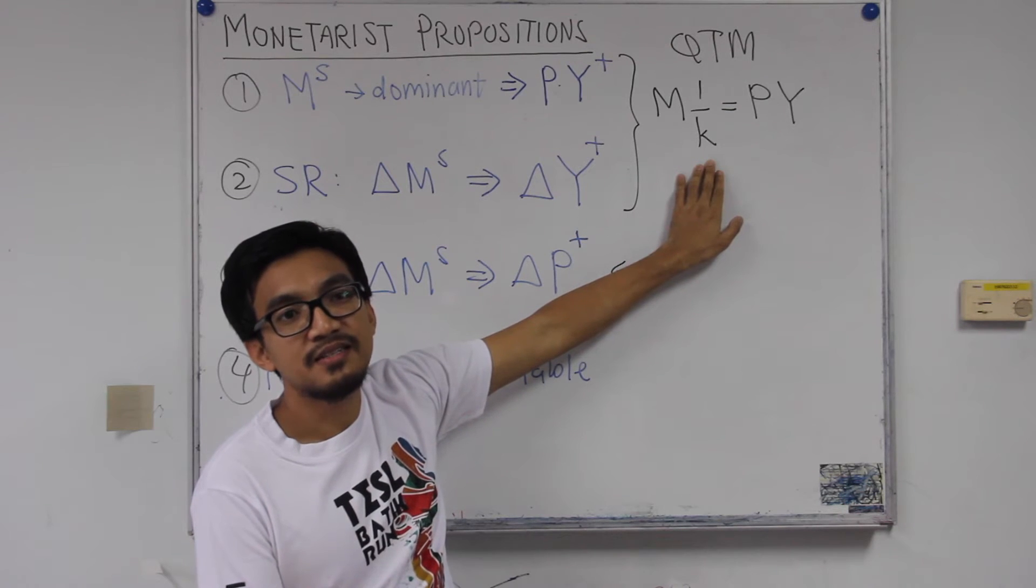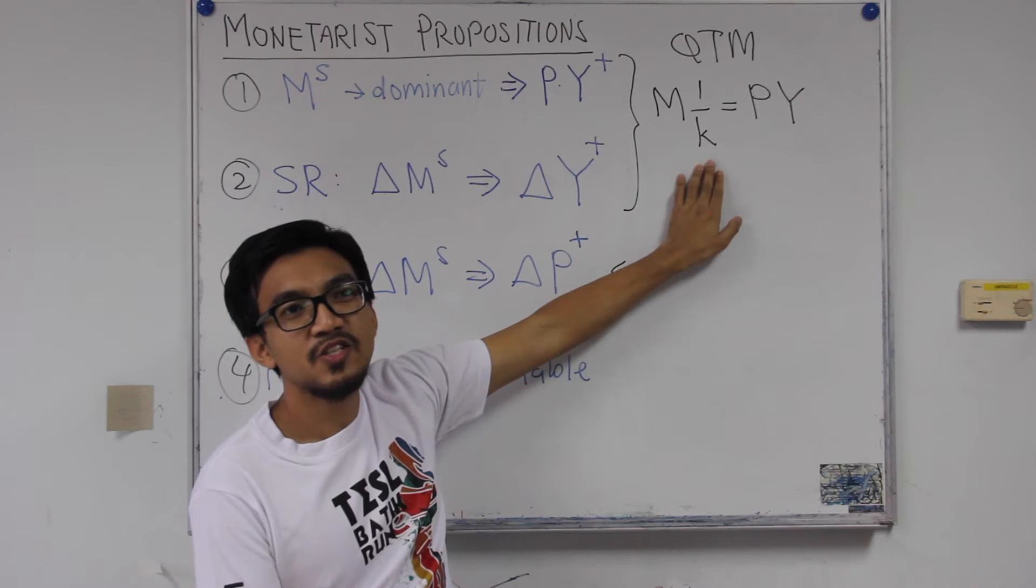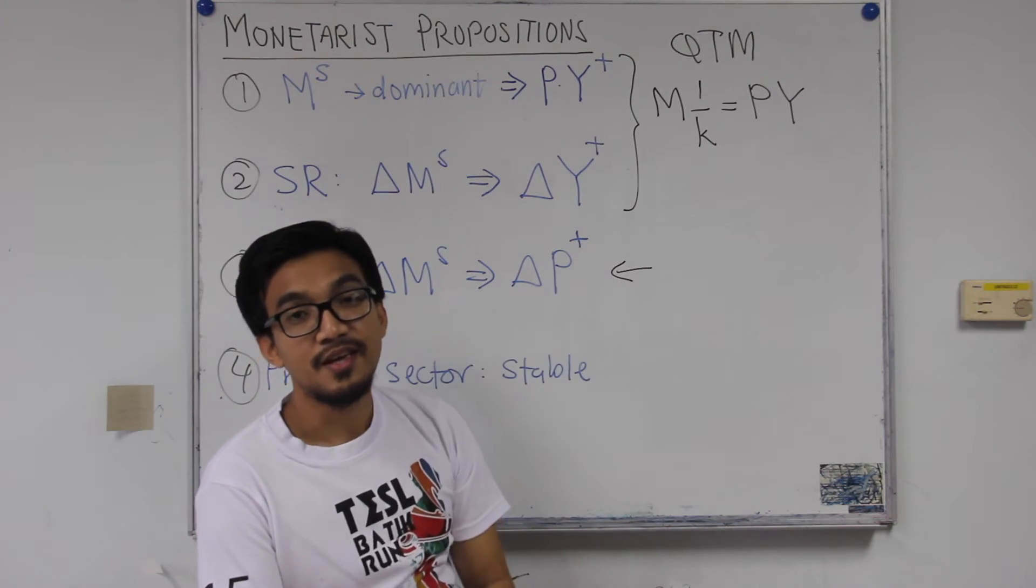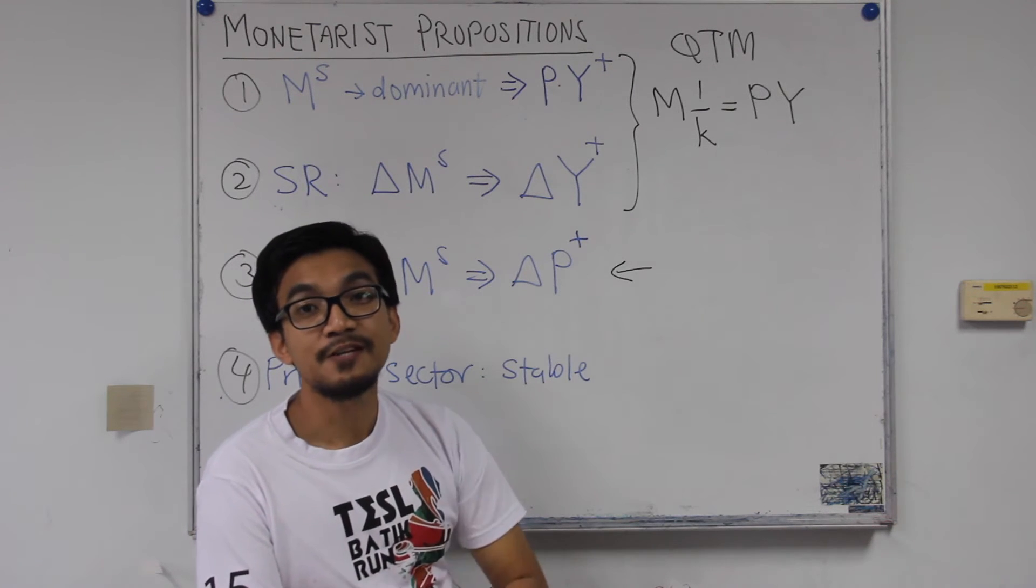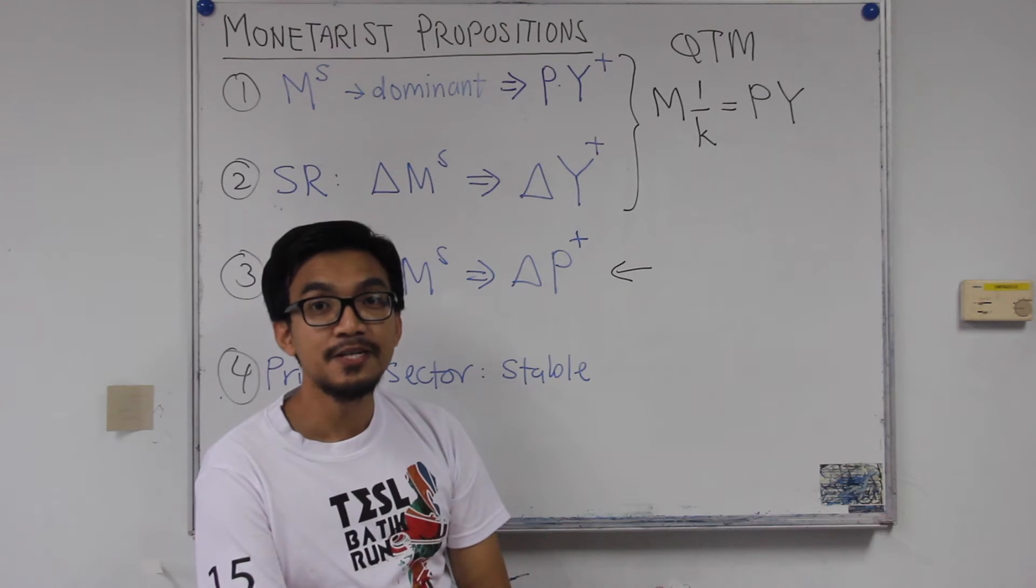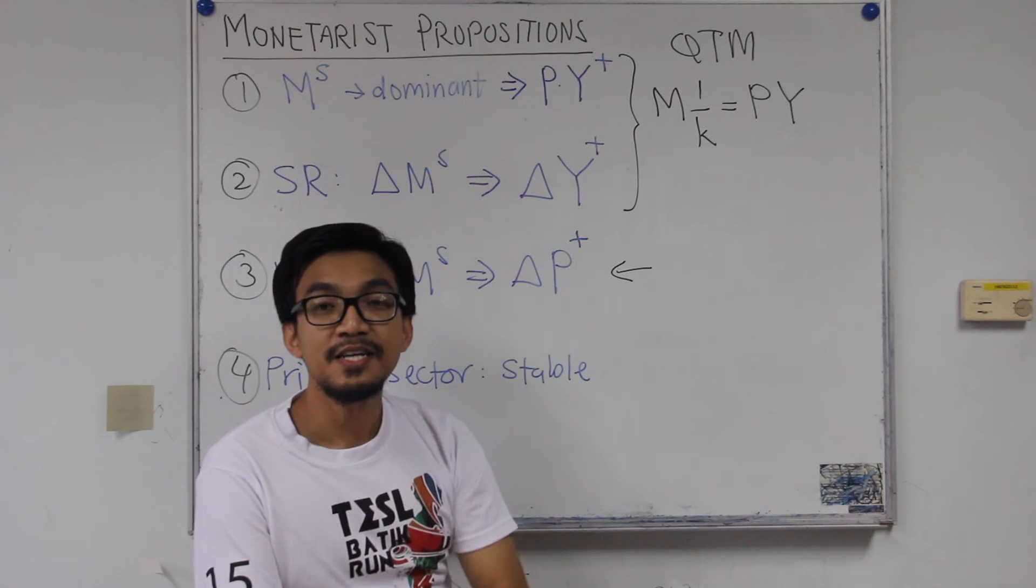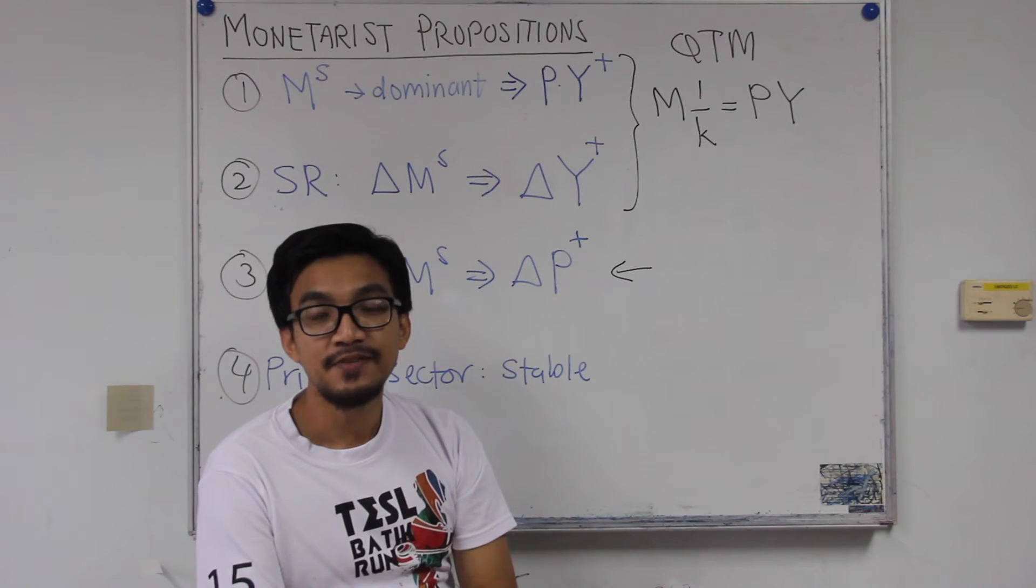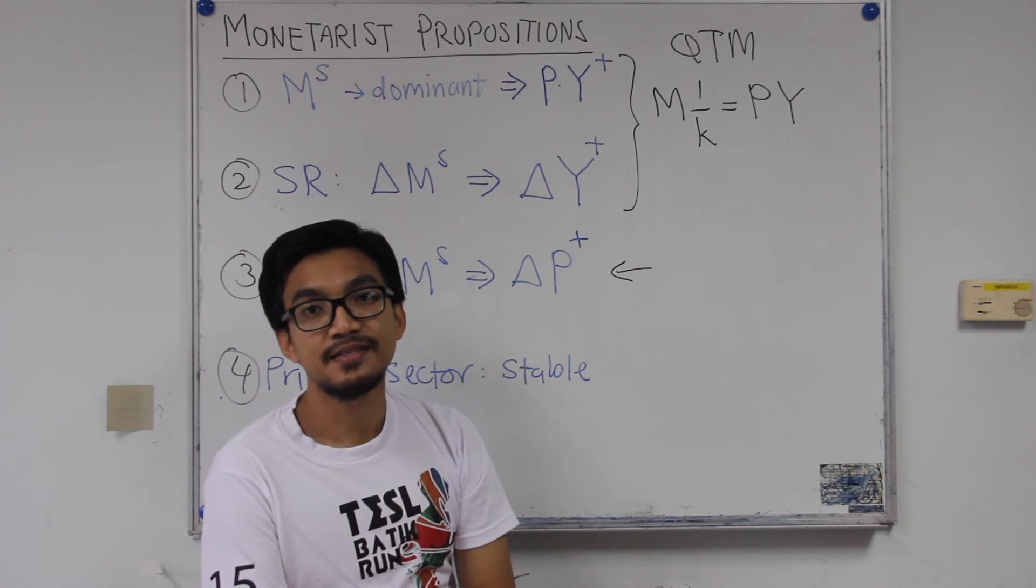So basically the demand for money is not sensitive to changes in interest rates. And remember how will then that translate into how will that affect the slope of the LM curve? So because that will then basically help us to compare the policy effectiveness between the Keynesian and the monetarists.